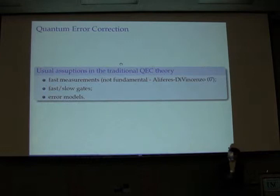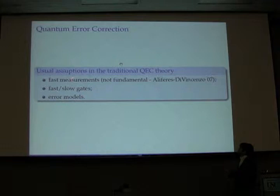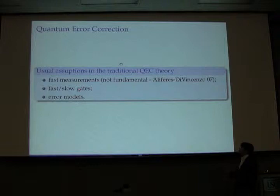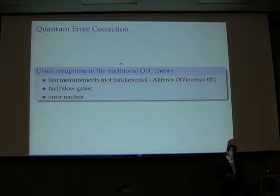The basic idea in traditional QEC theory is that you need fast measurements, but this has been shown not to be fundamental by Aloferis and DiVincenzo. You also have to worry about whether you're doing gates fast or slow. Eventually most of the work is done with error models. Today I'm going to talk about these two last steps — fast gates and slow gates and error models — when it's okay or not to use them.